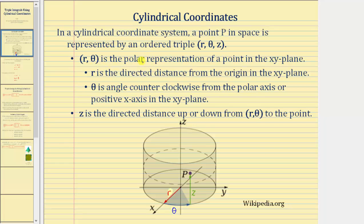R comma theta is the polar representation of a point in the xy plane. R is the directed distance from the origin in the xy plane. The angle theta is the angle counterclockwise from the polar axis, or the positive x-axis in the xy plane. And z is the directed distance up or down from R comma theta to the point in space.